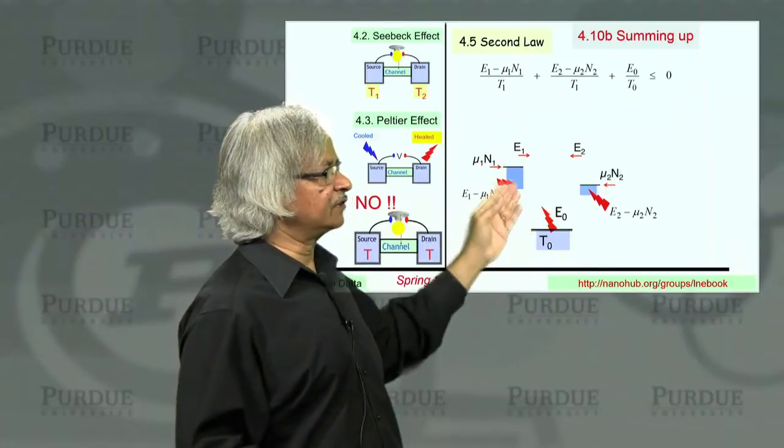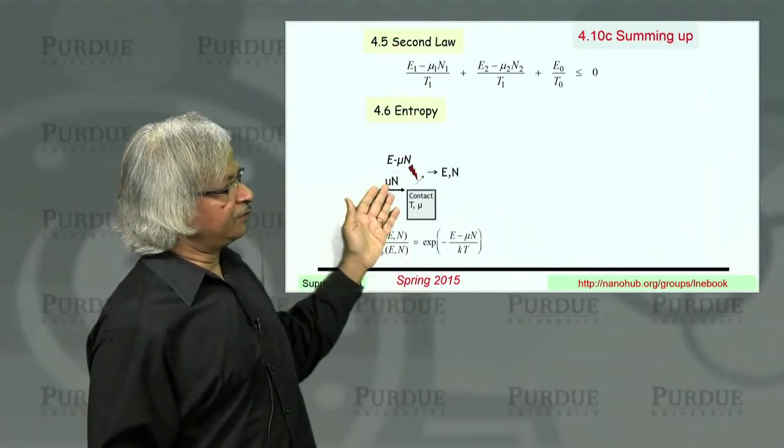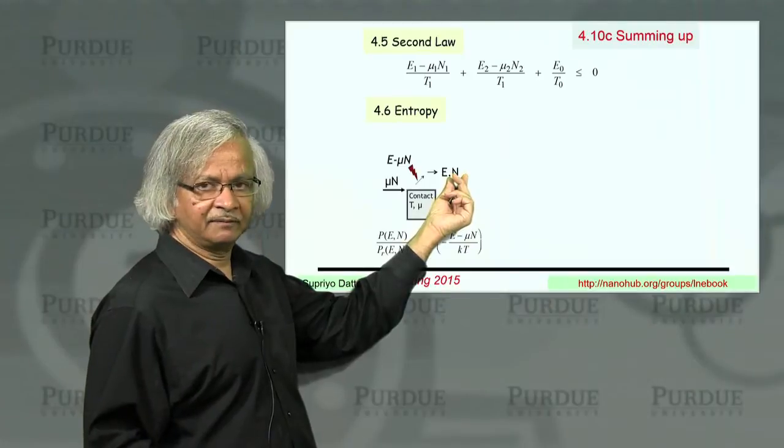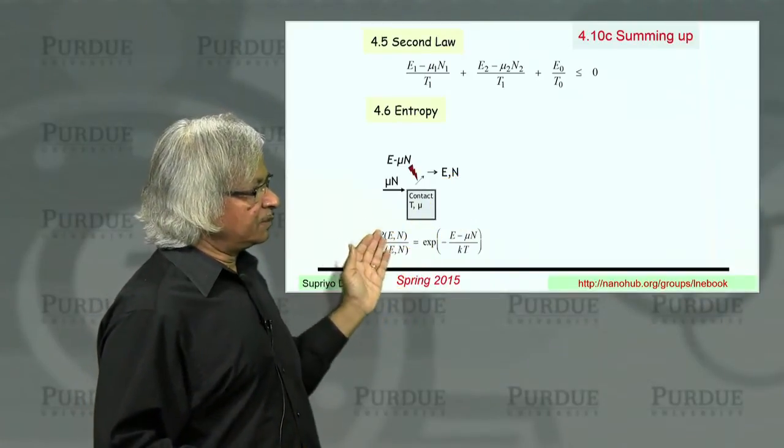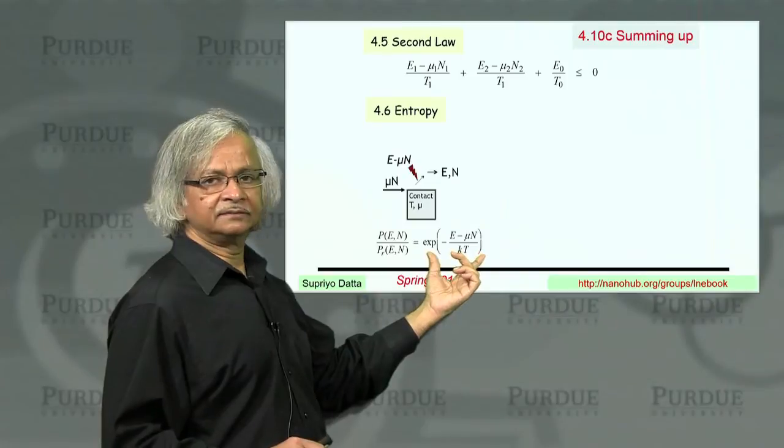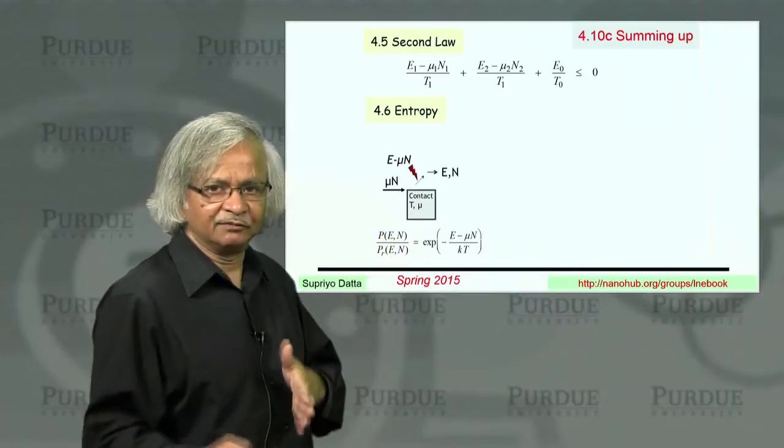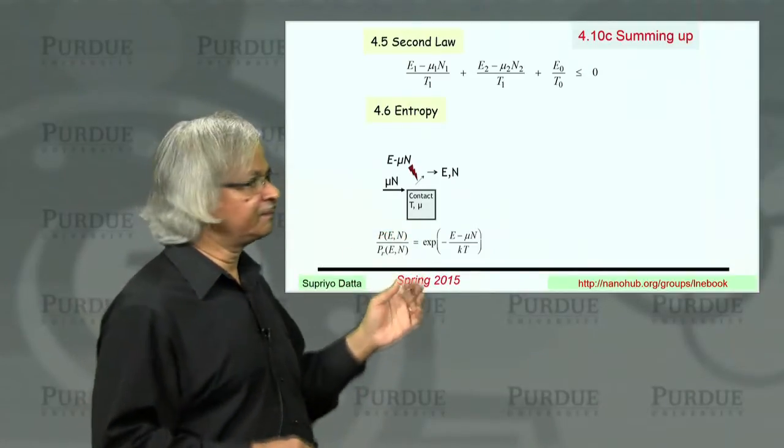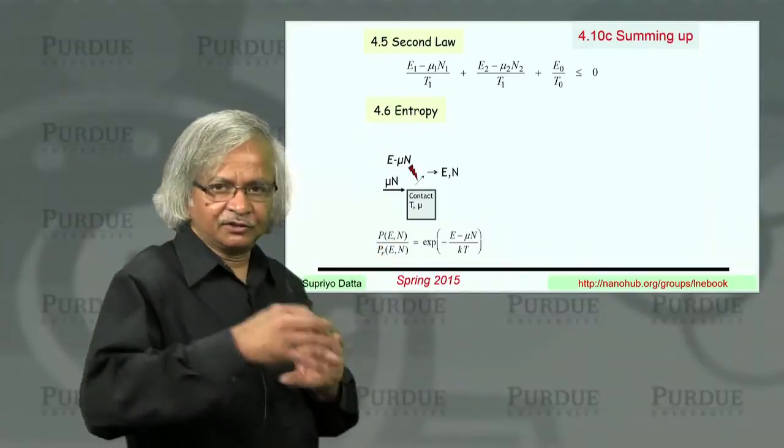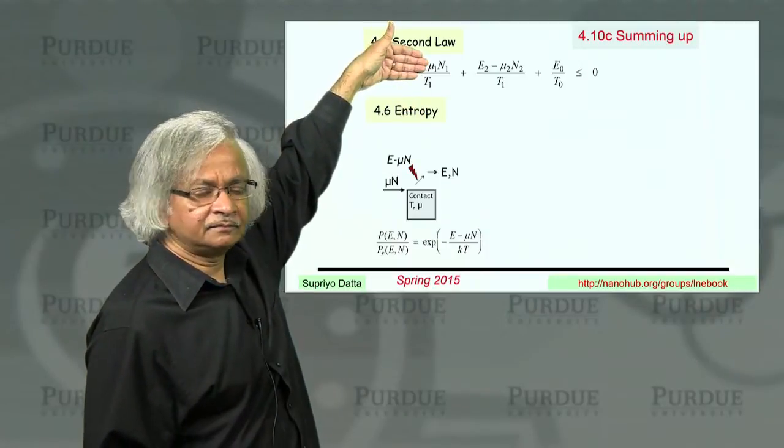Basically what this expresses is a property of these contacts. There are three terms here because there are three contacts here. And each of those contacts has a very simple property. Namely, that if you take a contact and you consider a process in which you extract energy E, or number of particles N from it, then the probability of that process divided by the probability of the reverse process is given by this factor. So, if this factor is very small, then the process is relatively unlikely because the reverse process is dominant. And when you have, say, three contacts, then in order for a process to happen, the product of things like this for the three contacts must be greater than or equal to 1.